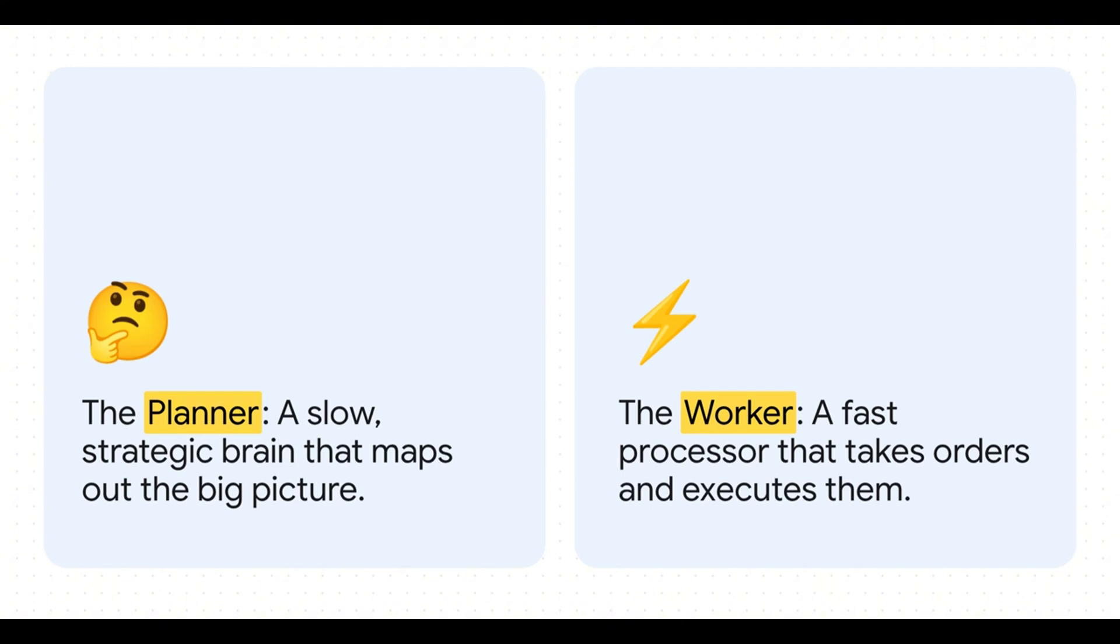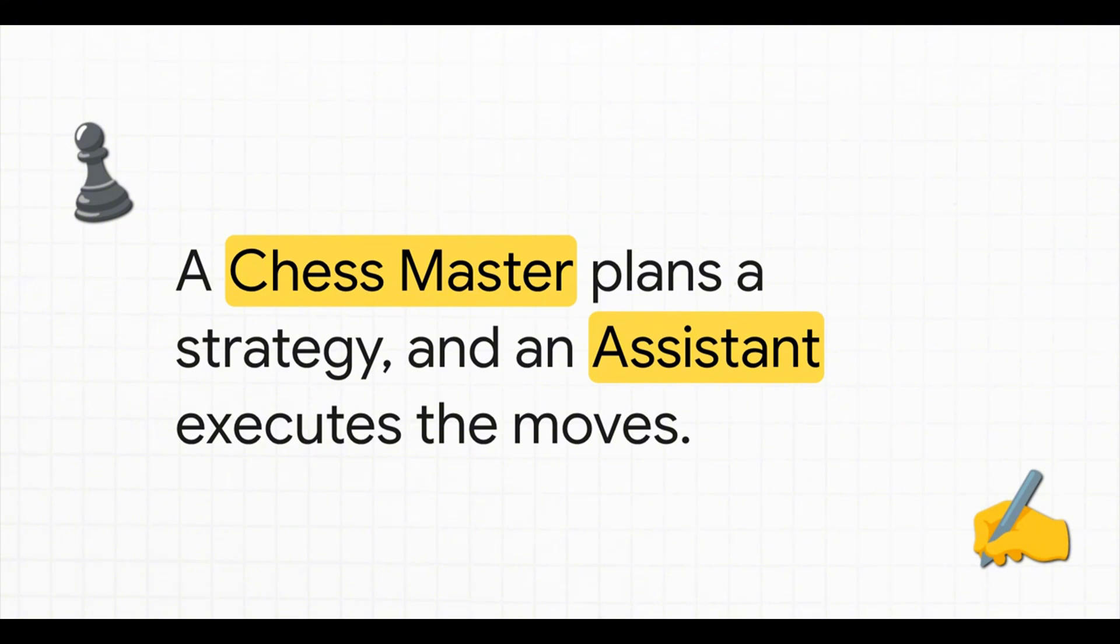First, you have the high-level planner. This is like the slow, deliberate, strategic part of your brain that maps out the big picture. Then you have the low-level worker, which is more like a fast, efficient processor that just takes orders and gets the job done. A really great way to picture this is to think of a chess master. They're planning the grand strategy, thinking moves ahead. And they have an assistant who just instantly executes the moves on the board. One strategizes, the other acts.